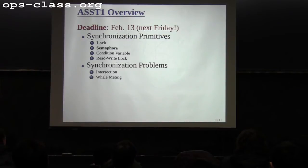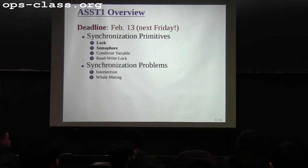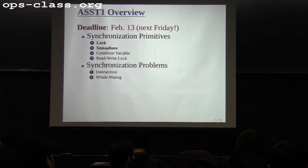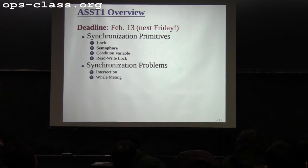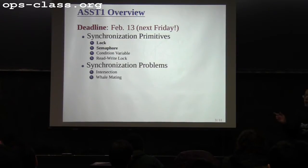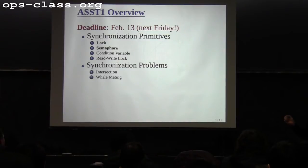The deadline for assignment zero and one is next Friday. At this point, if you are still doing assignment zero stuff, you really want to wrap up and move on to assignment one. The initial time allocation is one week for assignment zero and two weeks for assignment one. For assignment one, you need to understand synchronization primitives including lock, semaphore, condition variables, and read-write lock, and also solve two synchronization problems: the intersection problem and the whalemating problem.